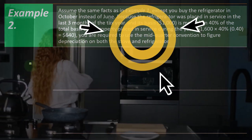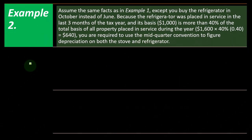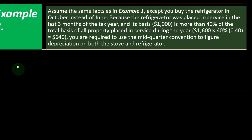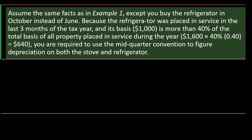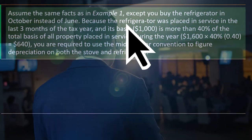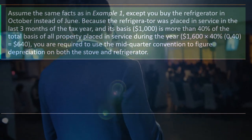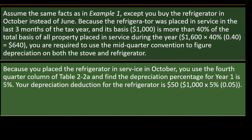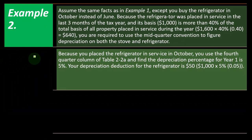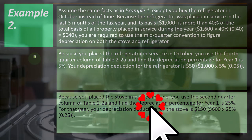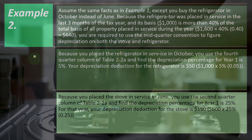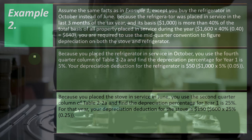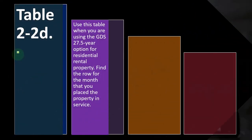Example two: same facts as example one except you buy the refrigerator in October instead of June. Because the refrigerator was placed in service in the last three months of the tax year and its basis of $1,000 is more than 40% of the total basis of $1,600 ($1,600 × 40% = $640), you are required to use the mid-quarter convention for both the stove and the refrigerator. Because the refrigerator was placed in service in October — the fourth quarter — you use the fourth-quarter column of Table 2-2A; the depreciation percent for year one is 5%. Because the stove was placed in service in June — the second quarter — you use the second-quarter column and find the depreciation percent is 25%, giving a deduction of $150 for the stove.